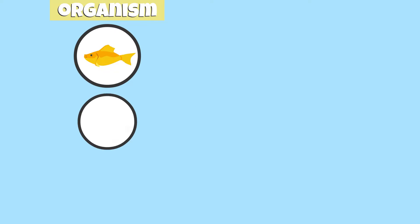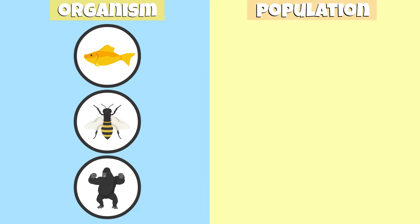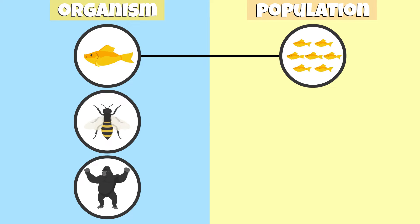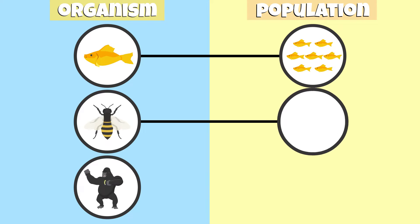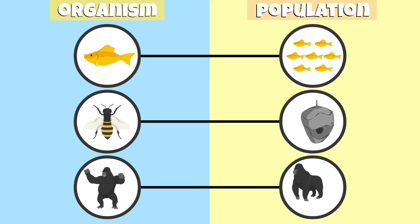An organism is an individual living being, and a population is a group of organisms of the same species that interact with each other and their environment.